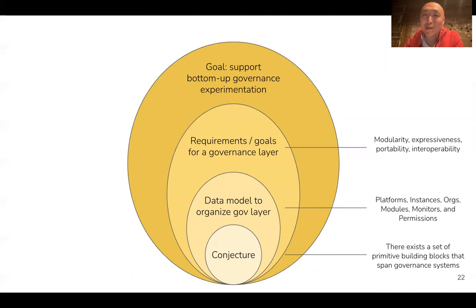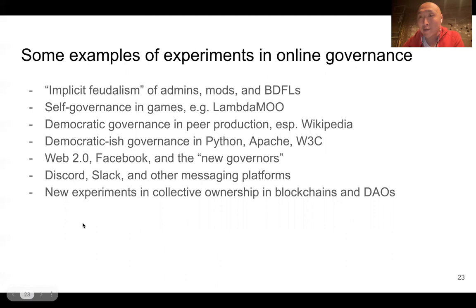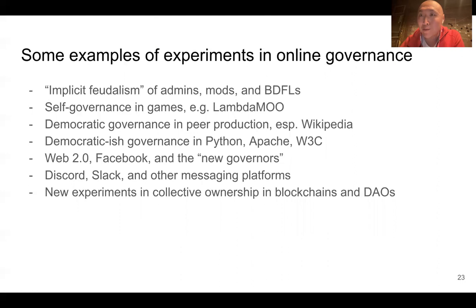Going back to the beginning: how do we actually support bottom-up governance experimentation across a wide range of settings? This range includes everything from games such as LambdaMOO, to democratic governance and peer production in things like Wikipedia, to new kinds of experiments being run within walled gardens like Facebook, Twitch, or Twitter, as well as exciting new experiments being run on the blockchain in the form of DAOs or decentralized autonomous organizations. The point of this slide, beyond motivating the rest of the development, is to show that there's already a wide range of experiments happening in online governance, and we're hoping to expand and improve those experiments across the internet.